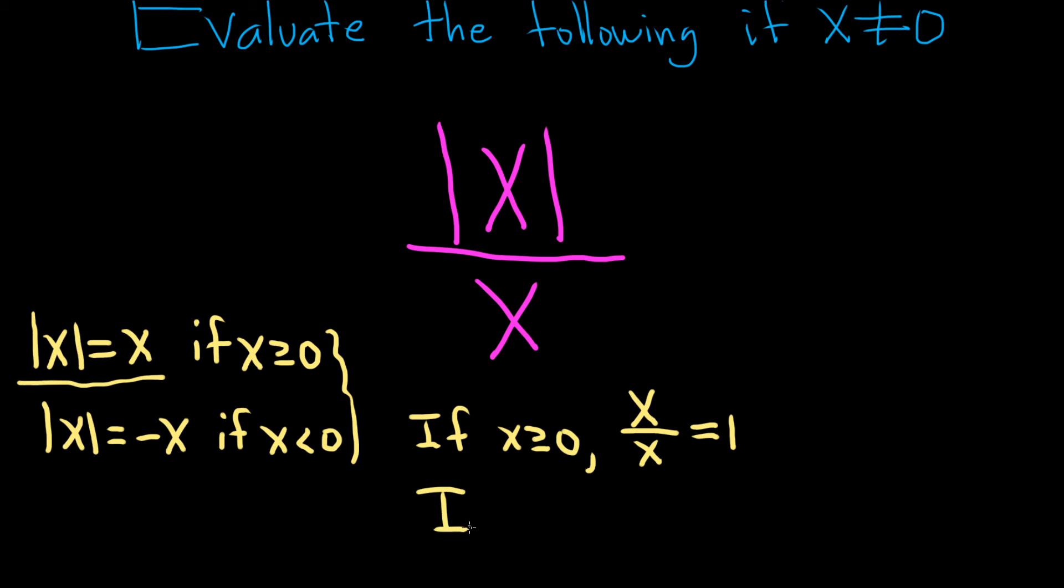If x is less than 0, then the absolute value of x is going to be equal to negative x. So we'll get negative x over x, so we get negative 1.